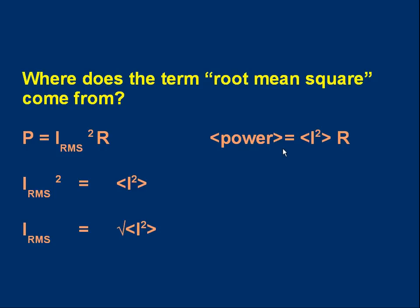That's an important formula: average power is the average value of I² × R. Now if you compare the two equations you'll see that I_rms² is equal to the average value of I².